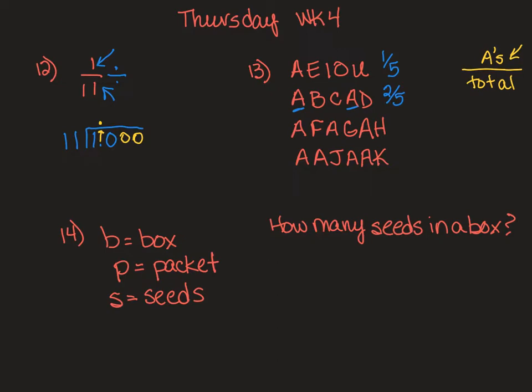In the next one, I have an A here, an A here, and an A here. I have one, two, three, four, five, six total. So I have three out of six.